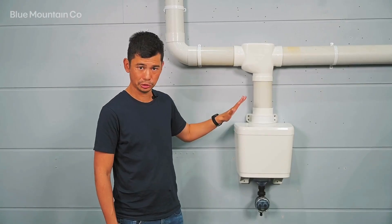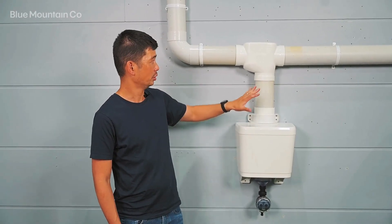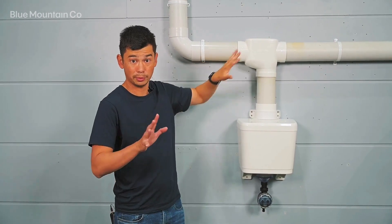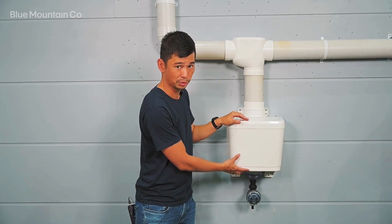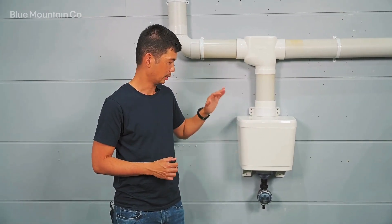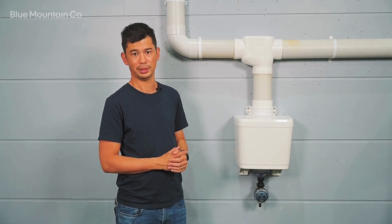So that's how to install the first flush boost. So all you need, you need your standard first flush diverter kit, whichever model you choose, and then go and grab yourself a boost chamber and that'll give you extra 20 liters or five gallons. And that's all there is to it. Thanks guys. Bye.